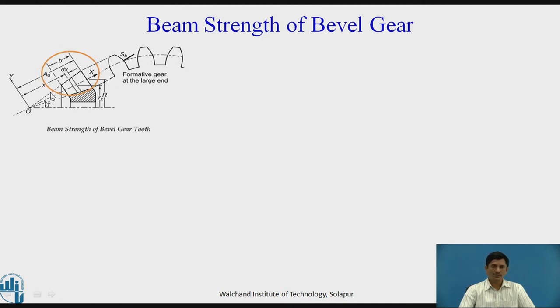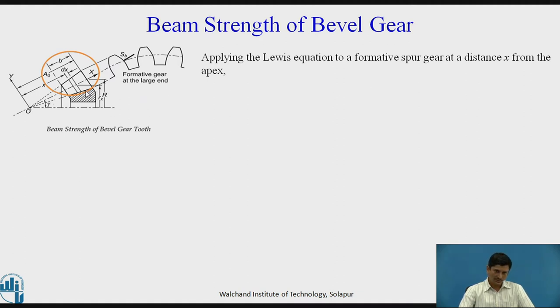We are concentrating on this zone. We need to consider an elemental distance dx at a distance x from the cone apex, the radius of which is Rx.